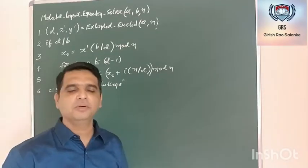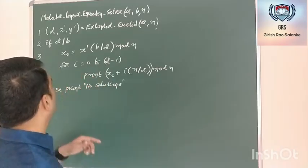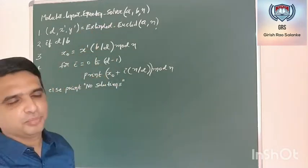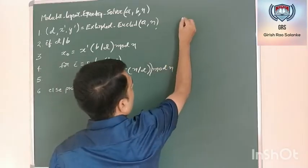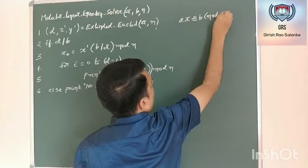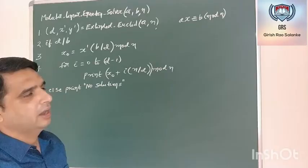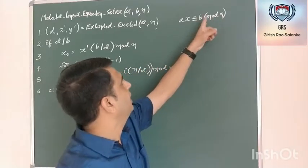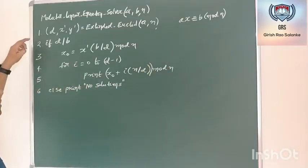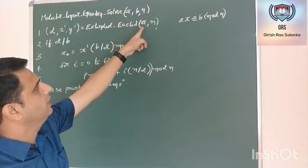This is the algorithm that we can use in order to solve the modular linear equation. The name of the algorithm is the modular linear equation solver, which has three inputs: a, b, and n. The modular linear equation is of the form ax congruent to b mod n, wherein a, b, and n are the inputs and our objective is to find x. In the first step of the algorithm, I am calling the extended Euclid's algorithm for a and n.